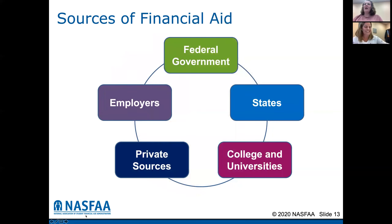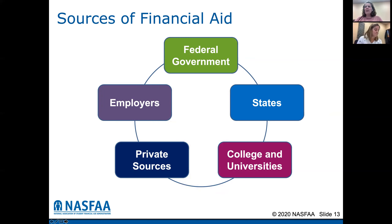Some of the sources of financial aid are the federal government, which is the largest source. New York State has one of the most generous grant programs in the country. Your colleges and universities have foundations, scholarships, and all sorts of things a student can apply for. There are private sources — scholarships that you can research through local papers, websites, and other resources to find those private sources. And also your employers — for parents, your union might have a scholarship available. My dad was a fireman; his union had a scholarship and I applied and got it. So look in every resource available to see if there's something to help your student apply for financial help for college.